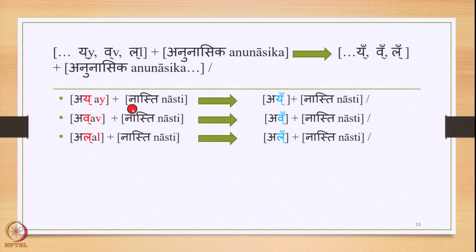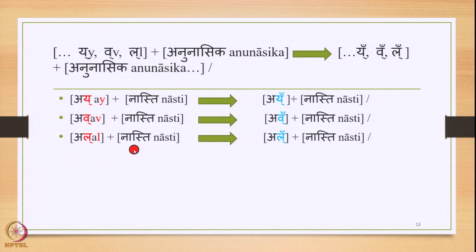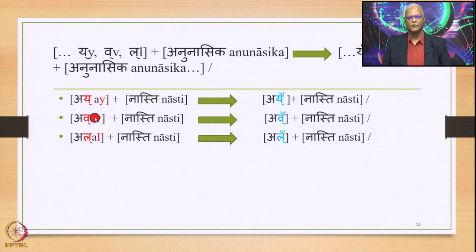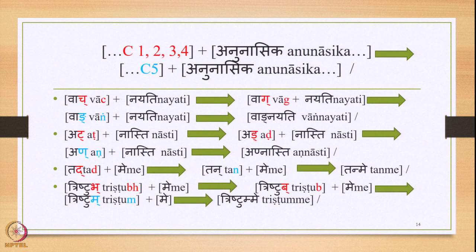So we have I plus Nasti, similarly Av plus Nasti, and Al plus Nasti. This triggers the Sutra Yaro Anunasike Anunasiko Va, which applies and substitutes Ya, Va, and La respectively by their nasal varieties. So we have I-nasal, Av-nasal, and Al-nasal plus Nasti as the output generated.